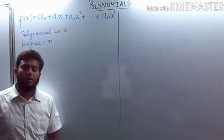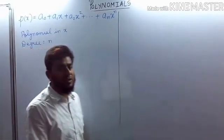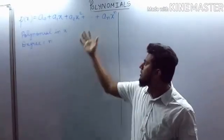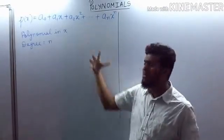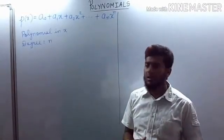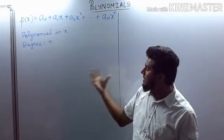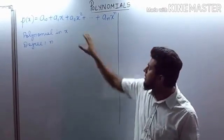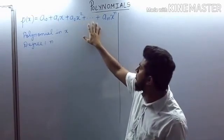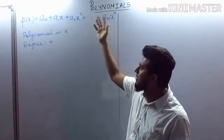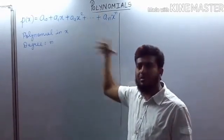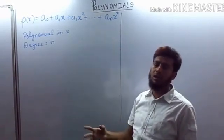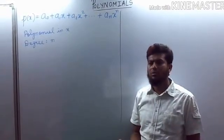Hi, today we are going to see things regarding polynomials. A polynomial is basically a combination of expressions with various degrees or powers of a variable. A polynomial involves expressions separated by plus or minus signs — like we have monomial, binomial, trinomial, and so on.